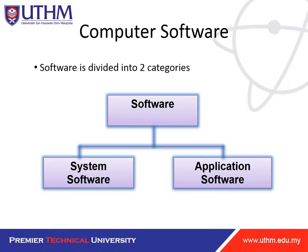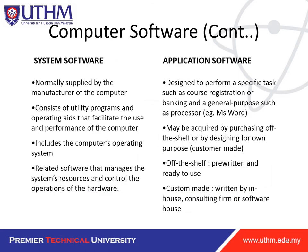There are two categories of software: system software and application software. System software is normally supplied by the manufacturer, consists of utilities, programs, and operating aids that facilitate the use and performance of the computer, and includes the operating system and related software that manage system resources and control hardware operations. Application software is designed to perform a specific task such as course registration or banking, or general purpose such as word processors, and may be purchased off-the-shelf or written in-house by a consulting firm or software house.